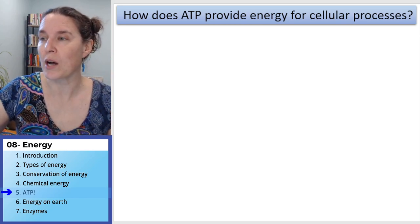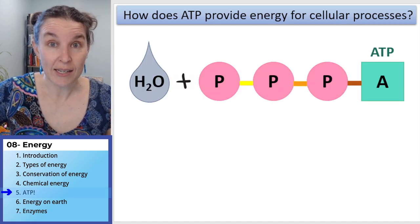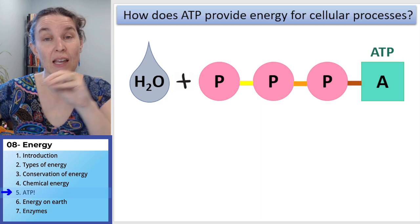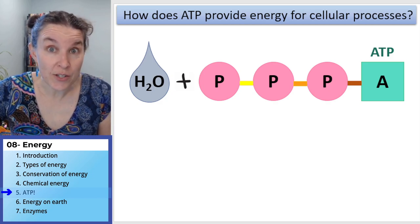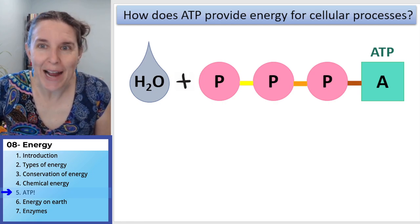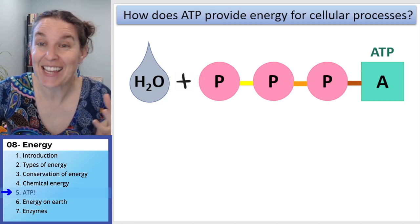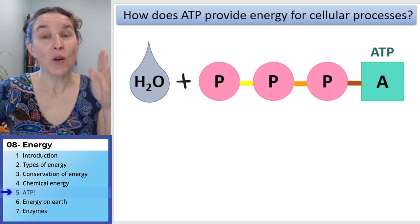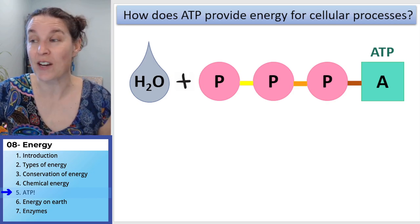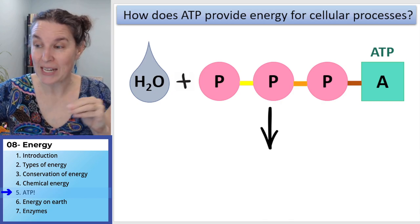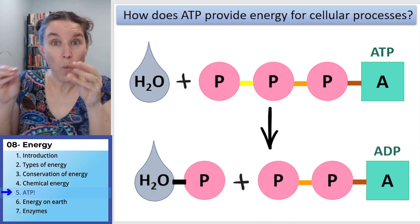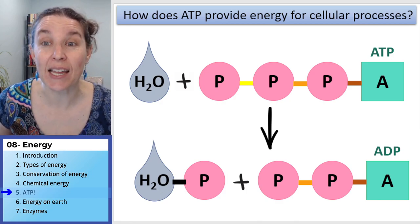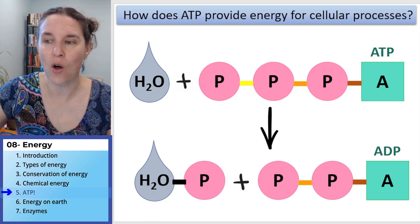It has to do with breaking and forming bonds. The chemical reaction we're looking at is between ATP and water. Is there any water in your cell? You're basically a bag of water, so everywhere that ATP is, it is surrounded by water. Water combining with ATP — adenosine triphosphate — forms a phosphate attached to water and ADP, adenosine diphosphate.